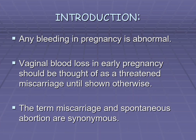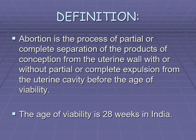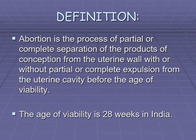Abortion is also known as the miscarriage, and any bleeding in the pregnancy is considered as abnormal. The terms miscarriage and spontaneous abortion are the same. The definition is the process of partial or complete separation of the products of conception — the zygote and its divisions — partially or completely separating from the uterine wall, with or without partial or complete expulsion from the uterine cavity, before the age of viability.